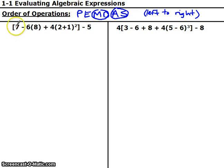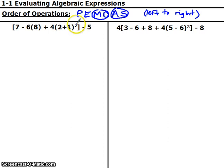So we want to do anything inside a grouping symbol first. Like this 8 right here is inside parentheses, but we can't really do anything — it's just an 8, so that doesn't really count. But like on this one, there's a 2 plus 1 inside the parentheses. We need to do this 2 plus 1 before we do any multiplying by 4 or the exponent of 2 or any of this other stuff. We can condense what we do a little bit, but you just have to make sure you're following this whenever possible.